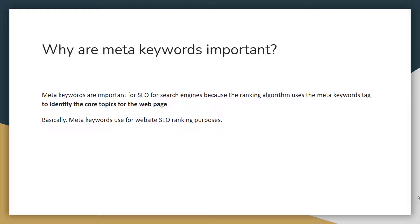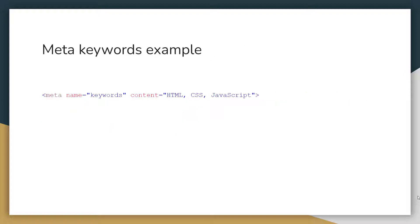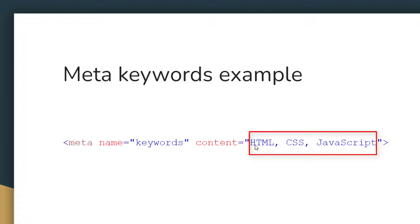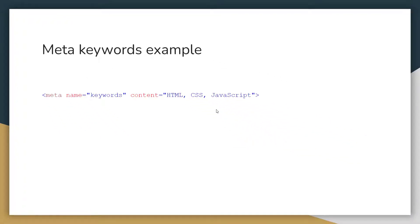Meta keywords are used for website SEO ranking purposes. Now I'm going to show you a meta keyword example. This is basically HTML code — you don't need to learn to code for that. You just add your meta keywords in the content attribute, and for each keyword you use a comma. For example: html, css, javascript.